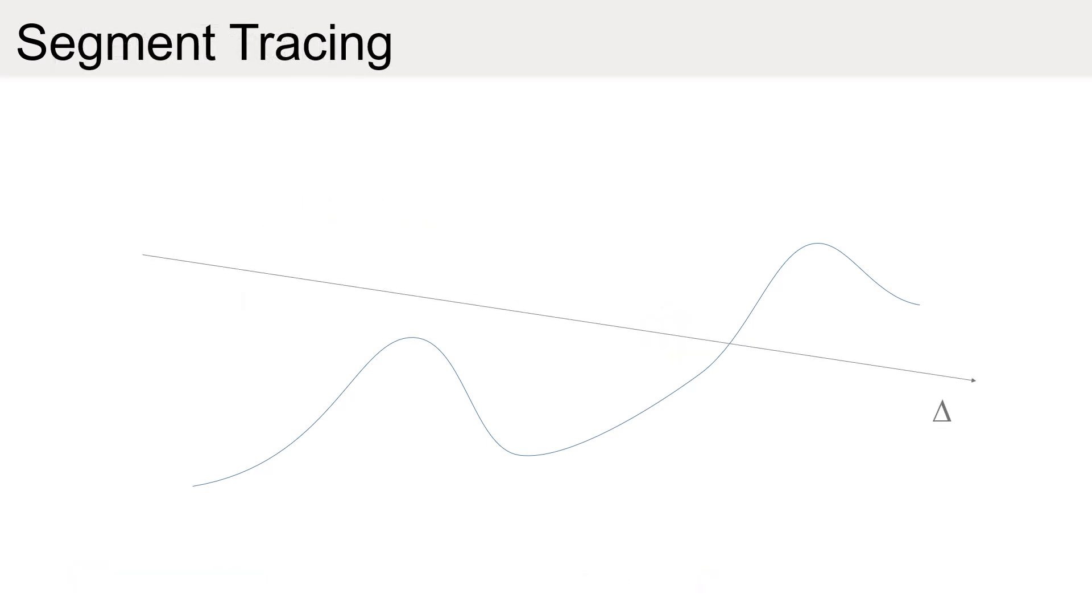In contrast, our approach takes advantage of the hierarchical and procedural definition of the implicit surface. We evaluate the Lipschitz bound locally at every step of the marching process over a candidate stepping segment.